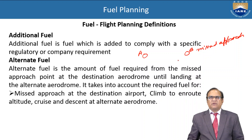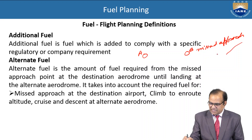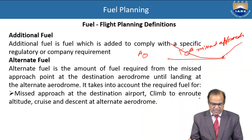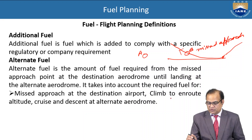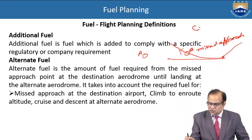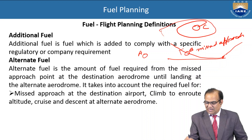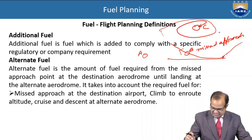Alternate fuel accounts for the missed approach at the destination airport. From the missed approach point the aircraft climbs to en-route altitude, cruises, and descends at the alternate aerodrome. So from A it has to go to C — it will take off, climb, go around, and then land. The fuel consumed in this process is called the alternate fuel.